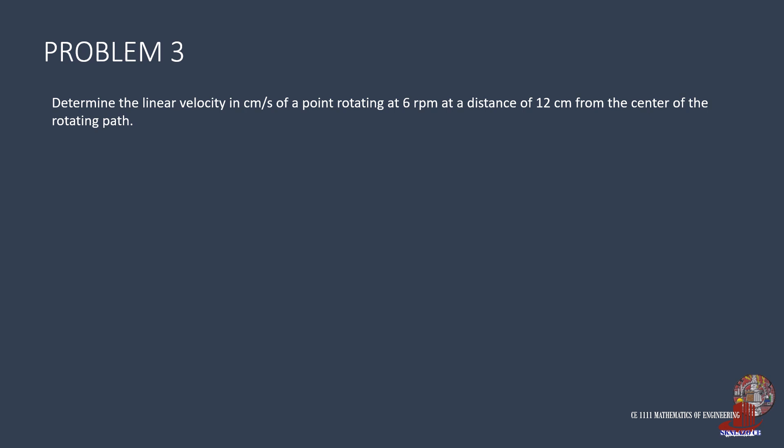Problem 3 asks for the linear velocity in centimeters per second of a point rotating at 6 rpm at a distance of 12 cm from the center. Linear velocity relates to angular velocity with V = r times omega. Substituting 12 cm and 6 rpm, then converting by multiplying 2 pi radians per revolution and 1 minute per 60 seconds, we cancel revolutions and minutes to get 12/5 pi, or 7.5398 centimeters per second.